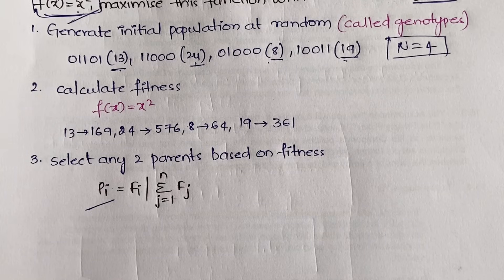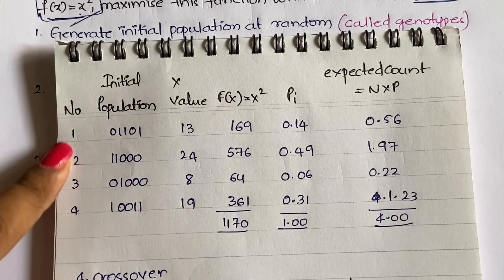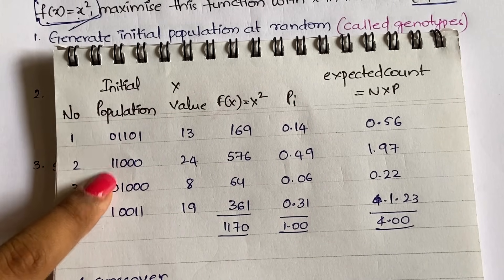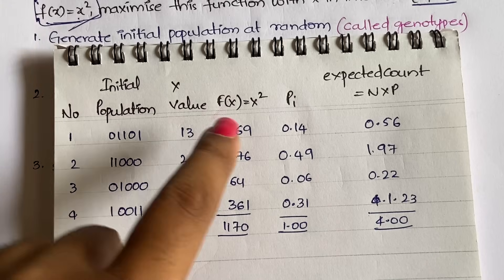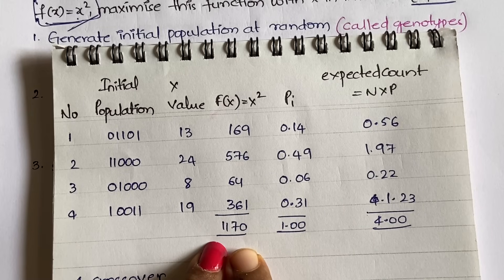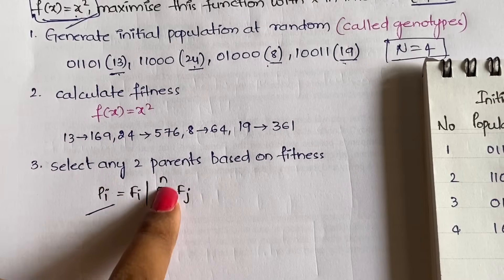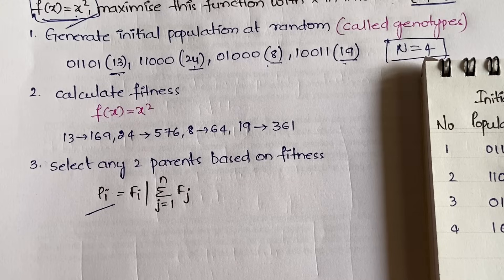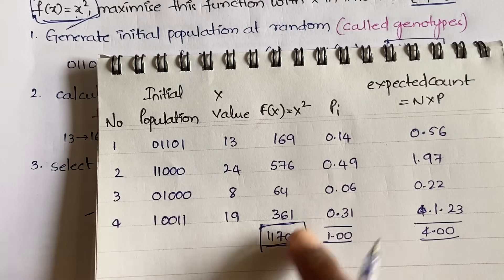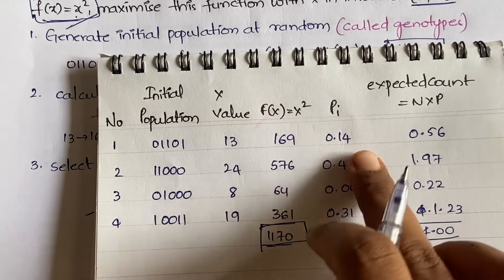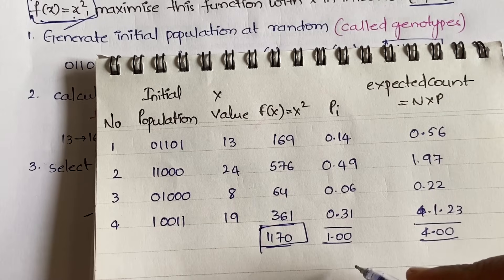In the tabular form we have four organisms numbered 1 to 4. The population values 13, 24, 8, and 19 are written with their binary representations, and f(x) = x² gives us 169, 576, 64, and 361. Adding all these gives a sum of 1170. Now to calculate pi, we use fi divided by 1170: 169/1170 = 0.14, 576/1170, 64/1170, and 361/1170.